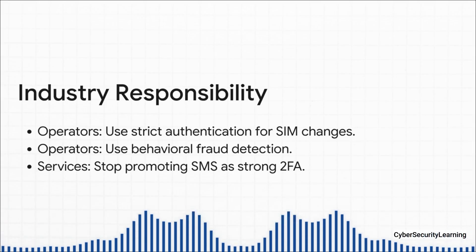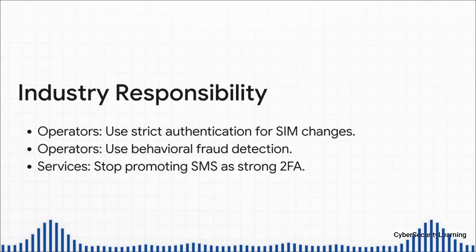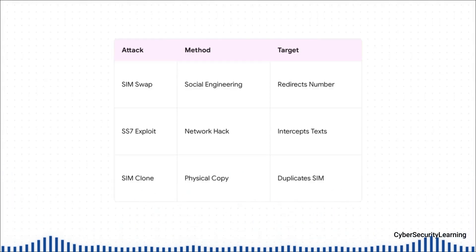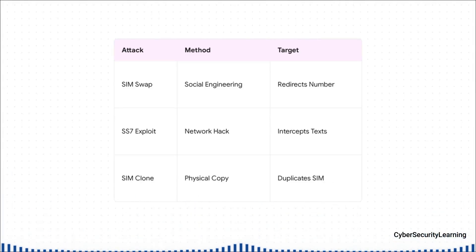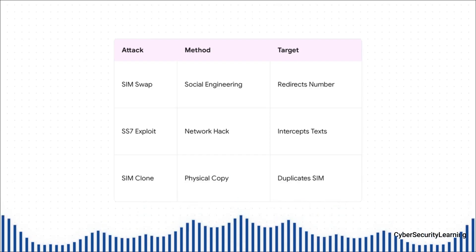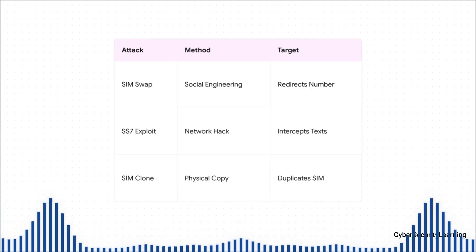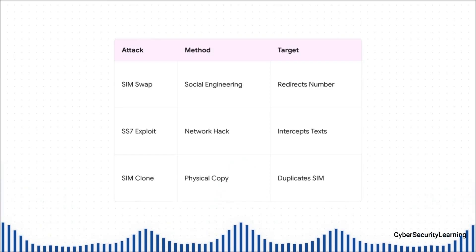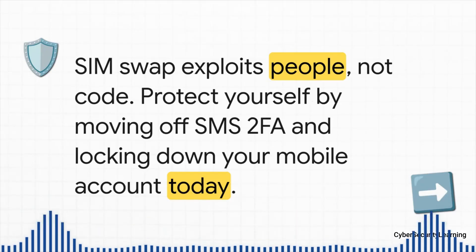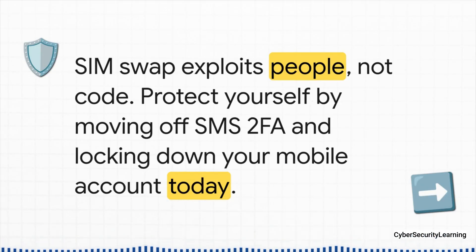Websites need to stop calling SMS a secure option for 2FA — it's just not. It's also helpful to see where SIM swapping fits in: it's not the same as an SS7 exploit, which is a super technical hack of the phone network itself usually done by governments. And it's not SIM cloning, where someone has to physically get their hands on your SIM card to copy it. SIM swap is the criminal's favorite because it hits a dangerous sweet spot — way lower tech than a network hack, no physical access needed, and the damage is massive. It just exploits the weakest link in the chain: people.